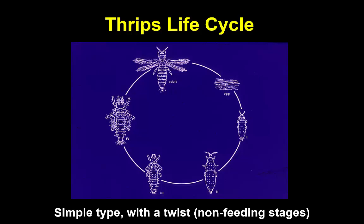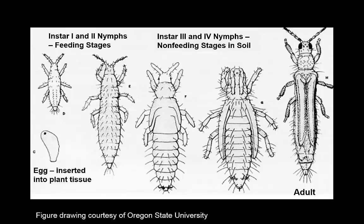The life cycle of thrips is unique. It is of the simple metamorphosis type but has a little twist. You're going to see some things happening as they progress to the adult stage that is a little different, particularly having two non-feeding stages. The basic life stages on plants: an egg will hatch, then there will be two feeding stages one after the other, then two non-feeding stages usually present in the soil — they drop from the plant — and then the adult.